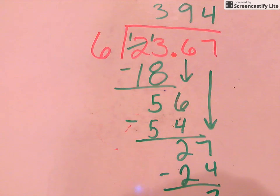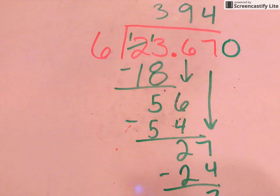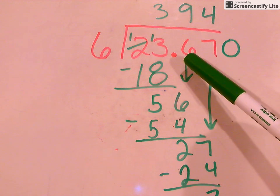And this is something you may have done in the past in division before, but something else we can do here is we can add a 0 because if we add a 0 to this number, it really doesn't change it any because of the decimal point that's there.